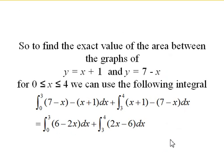The integral to calculate this area is going to look like the following. We're going to go from 0 to 3 with 7 minus x on top and x plus 1 on bottom, subtracting them. And then from 3 to 4 with x plus 1 on top, and then subtracting out 7 minus x. So we get the following two integrals.